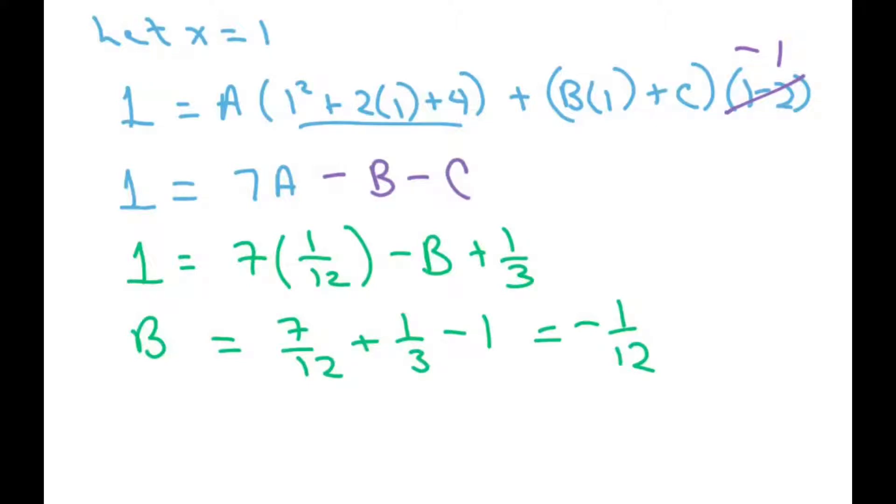Now that we have our A's, our A again was 1/12th, and our B was negative 1/3, and so now we just fill in our original equation, and we're going to get 1 over x cubed minus 8 equals our A, which is 1/12th, over your x divided by x minus 2, plus, and our B was negative 1/12th, and you had an x minus your C, which is minus 1/3, divided by x squared plus 2x plus 4.